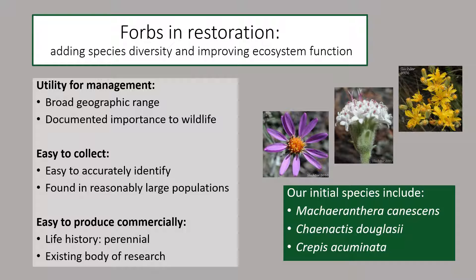The foundation for this study began with the selection of focal species with particular characteristics of interest. These included having a broad geographic range and known importance as resources for wildlife, as well as being easy to identify for novice botanists and found in reasonably large populations so that seed collection would not adversely affect those populations. We also preferred species with a perennial life history strategy and an existing body of research. We selected a suite of three species: Machaeranthera canescens, Conactus diglicei, and Crepus acuminata.